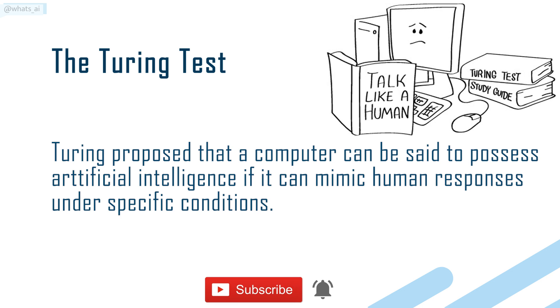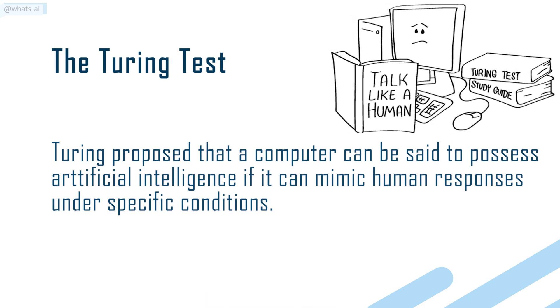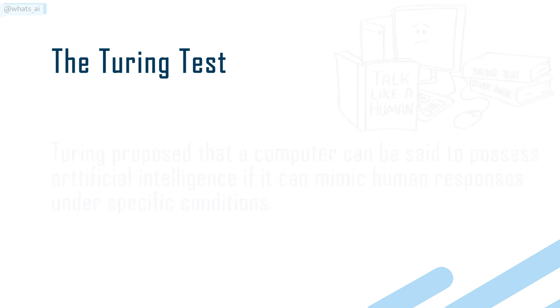Turing proposed that a computer can be said to possess artificial intelligence if it can mimic human responses under specific conditions.